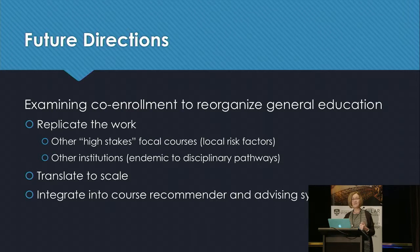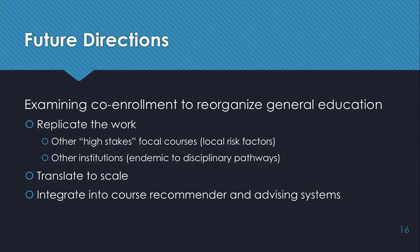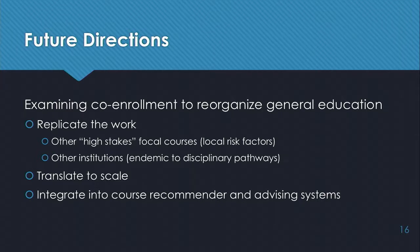In the future, we're replicating this. We used a focal course as a comparison course, and we can look at other targeted, required, difficult courses deeply embedded in a curriculum and see how these results replicate — especially high-stakes weed-out courses where, if you don't do well, you're essentially told you can't be a major. How can we help more students succeed in these kinds of curricula? We'd like to scale it up and integrate this with course recommender and advisor systems.